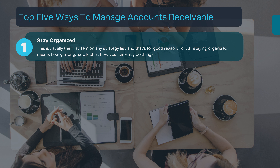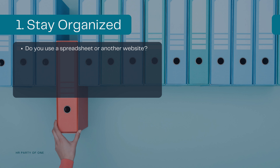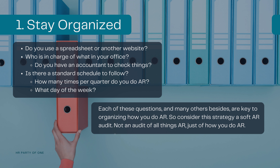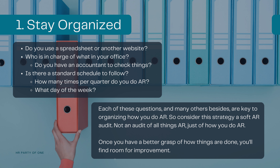Staying organized is usually the first item on any strategy list, and that's for good reason. For AR, staying organized means taking a long hard look at how you currently do things. For example, do you use a spreadsheet or another website? Who is in charge of what in your office? Do you have an accountant to check things? Is there a standard schedule to follow? How many times per quarter do you do AR? What day of the week? Each of these questions are key to organizing how you do AR. Consider this strategy a soft AR audit — not an audit of all things AR, just of how you do AR. Once you have a better grasp of how things are done, you'll find room for improvement.